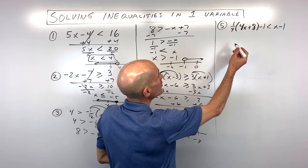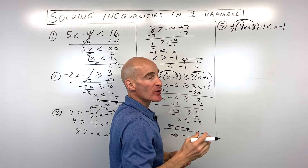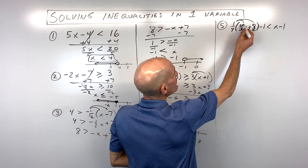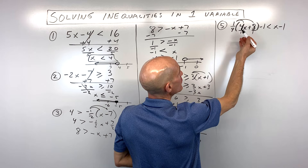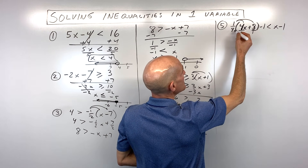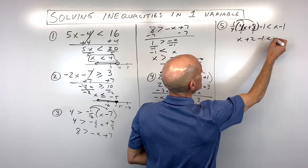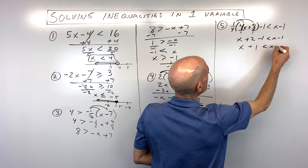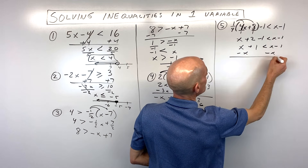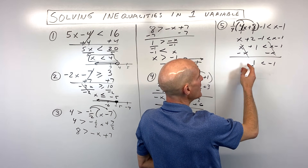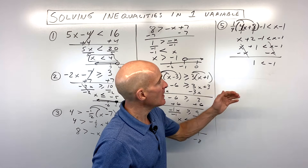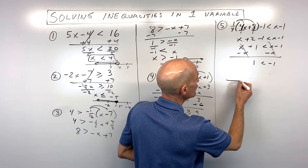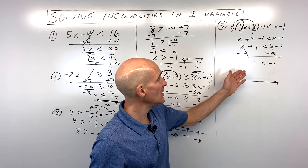Number 5, the last problem. We're going to distribute the one-fourth. When working with fractions, it helps to put whole numbers over 1, because anything divided by 1 is itself. Multiply numerators together and denominators together — so 4 over 4 is 1, 1 times 8 is 8, 4 times 1 is 4, and 8 divided by 4 is 2. Combine like terms: 2 minus 1 is 1. Subtract x from both sides — those cancel — and we get 1 is less than negative 1. But is 1 less than negative 1? No. So there's no solution to this problem. If you were graphing this on the number line, you would just leave it blank, because there's nothing that makes this true.